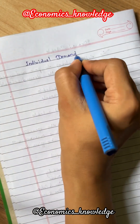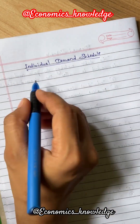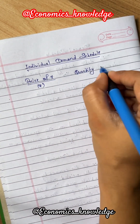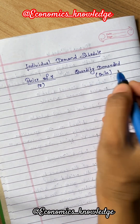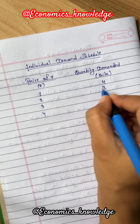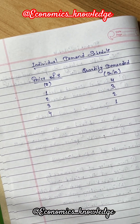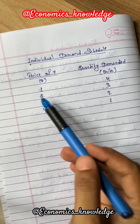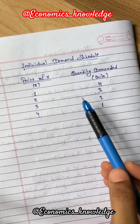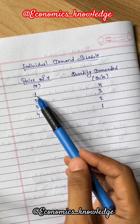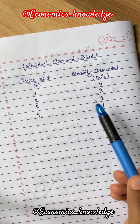Now let's see the individual demand schedule. Price of X in rupees, quantity demanded in units. From the table we see the inverse relation between price and quantity demanded. As the price of commodity X goes on increasing, the quantity demanded goes on decreasing.